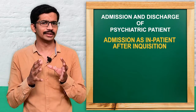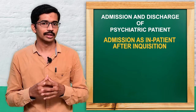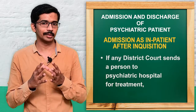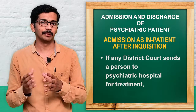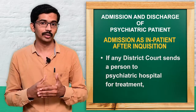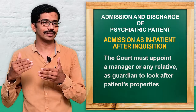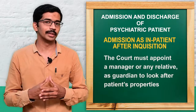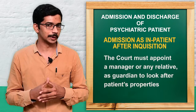The next type of admission is admission after judicial inquisition. If a court holds an inquisition and finds that the psychiatric patient is mentally ill and has significant property, the person will be sent to the psychiatric hospital for treatment. The court will appoint a manager or a relative as guardian for his properties while the person receives treatment.